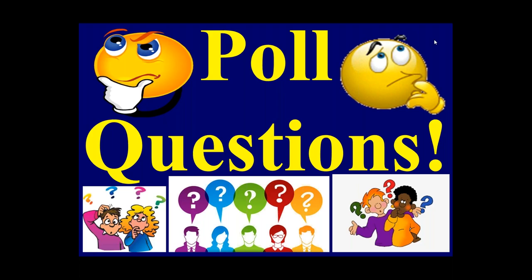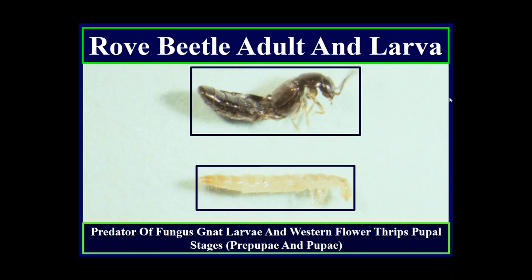Now let's talk about some of our research on direct and indirect effects on certain biological control agents. The first is the rove beetle — adults and larvae are excellent predators of fungus gnat larvae and pupal stages of western flower thrips. They reside in the growing medium, and we've been rearing them for about 15 years.